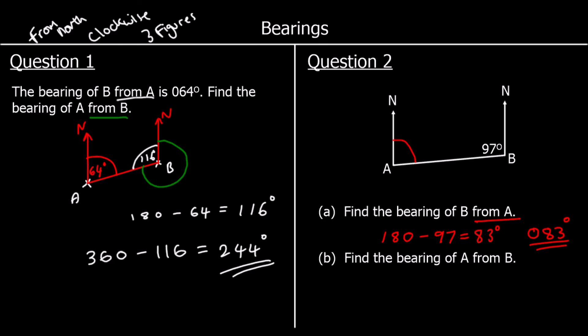Part B: find the bearing of A from B. So we're at B, measuring from north in a clockwise direction. We can use angles around the point, which add up to 360 degrees. So 360 take away 97 is 263 degrees.